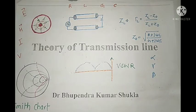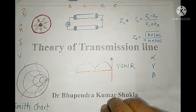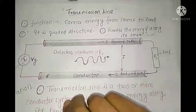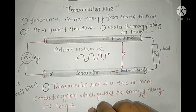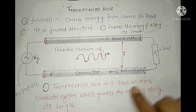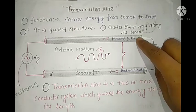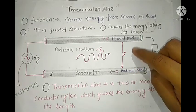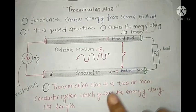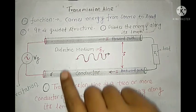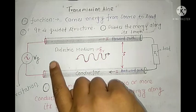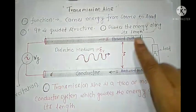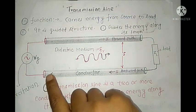Hi, this is Dr. Bhupendra Kumar Shukla. Today I will teach you the theory of transmission lines. First we will see what is a transmission line. A transmission line is a two or more conductor system — this is one conductor, this is another conductor — so in this picture there is a two-conductor system. The function of a transmission line is that it carries energy or a signal from a source to a destination end.